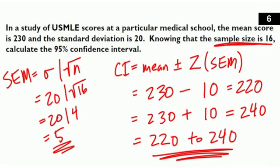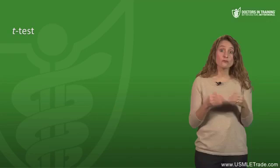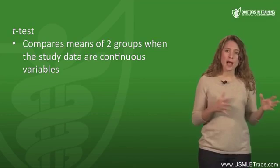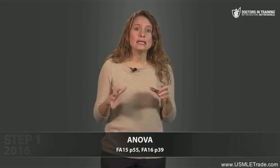The rest of this material is not as high-yield but still fair game for Step 1. First, the student t-test is a way to compare means of two groups when the study data are continuous variables — for example, comparing average weight of men versus women. ANOVA is similar but used when comparing three or more groups. It stands for analysis of variance and detects differences between means of three or more groups — like a more complex t-test.